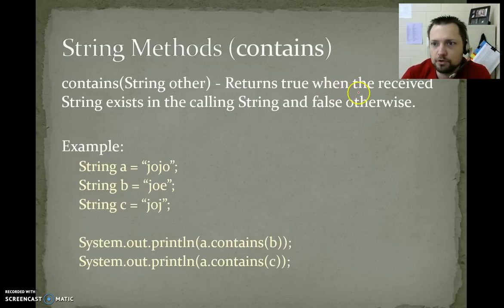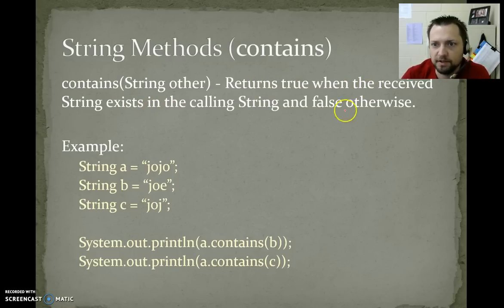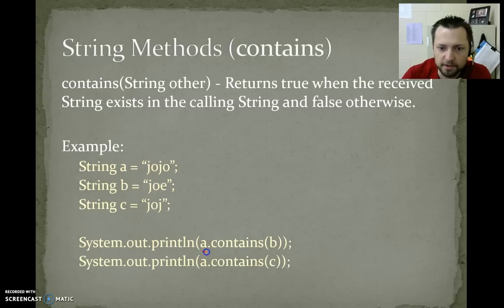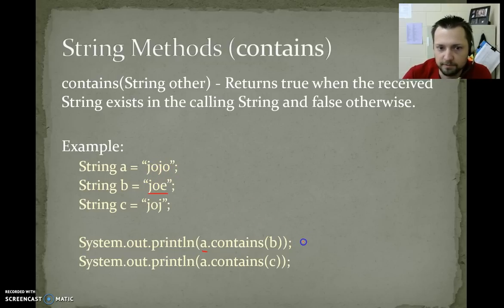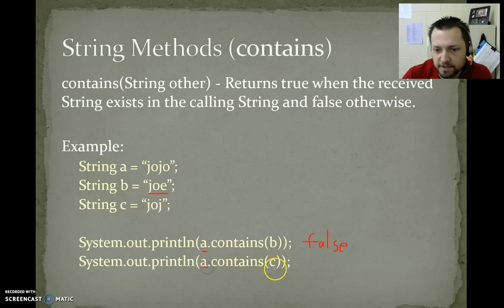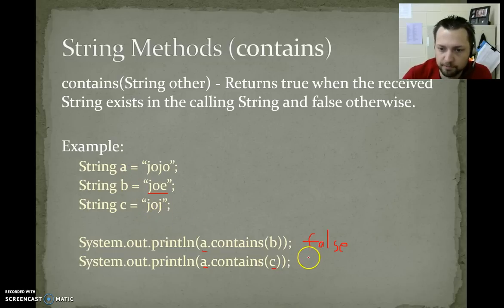Contains — returns true when the received string exists in the calling string and false otherwise. So if we have a as "JoJo", we say does a contain b where b is "Joe" — J-O-E. No, there is no "Joe" in that word, so we get false. Then a.contains(c) — does "JoJo" contain "JoJ"? Yes, so we get true.